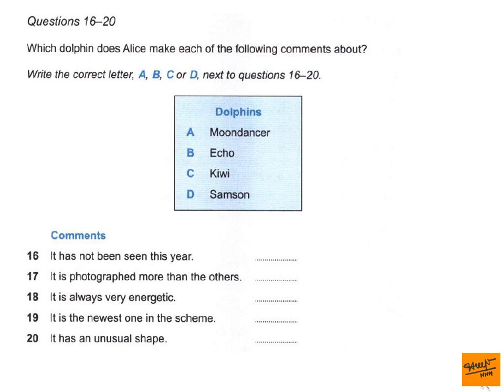They all have their own personalities. Moondancer is very elegant and curves out and into the water very smoothly, whereas Samson has a lot of energy. He's always leaping out of the water with great vigour. You'd probably expect him to be the youngest. He's not quite — that's Kiwi. But Samson's the latest of our dolphins to be chosen for the scheme. Kiwi makes a lot of noise, so we can often pick her out straight away. Echo and Moondancer are noisy too, but Moondancer's easy to find because she has a particularly large fin on her back, which makes her easy to identify. That is the end of Section 2. You now have half a minute to check your answers.